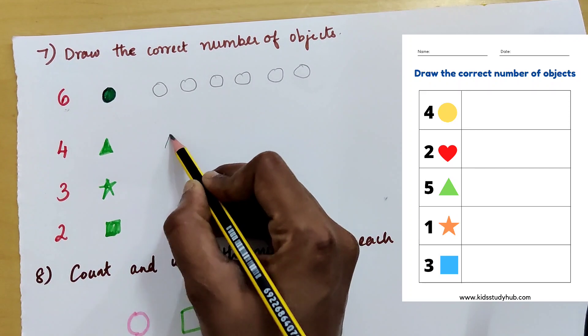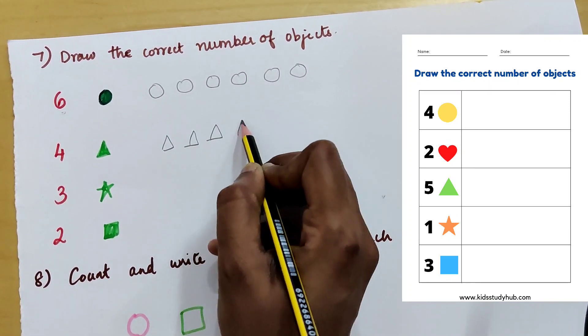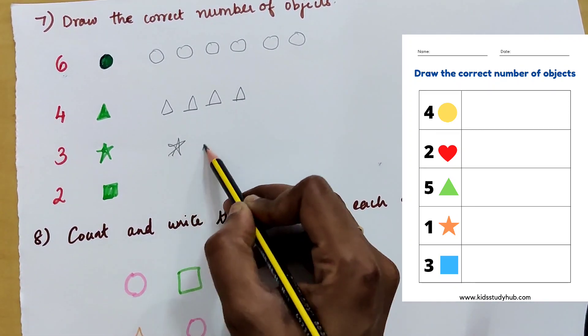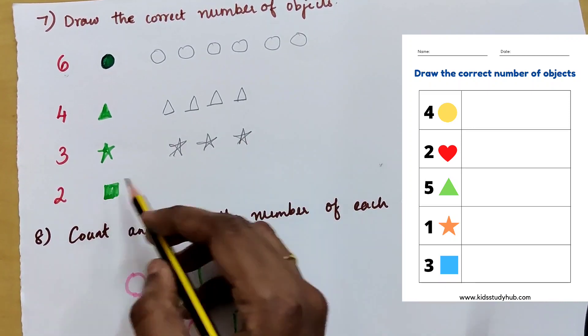4 triangles. 1, 2, 3, 4. 3 stars. 1, 2, 3. 2 squares.